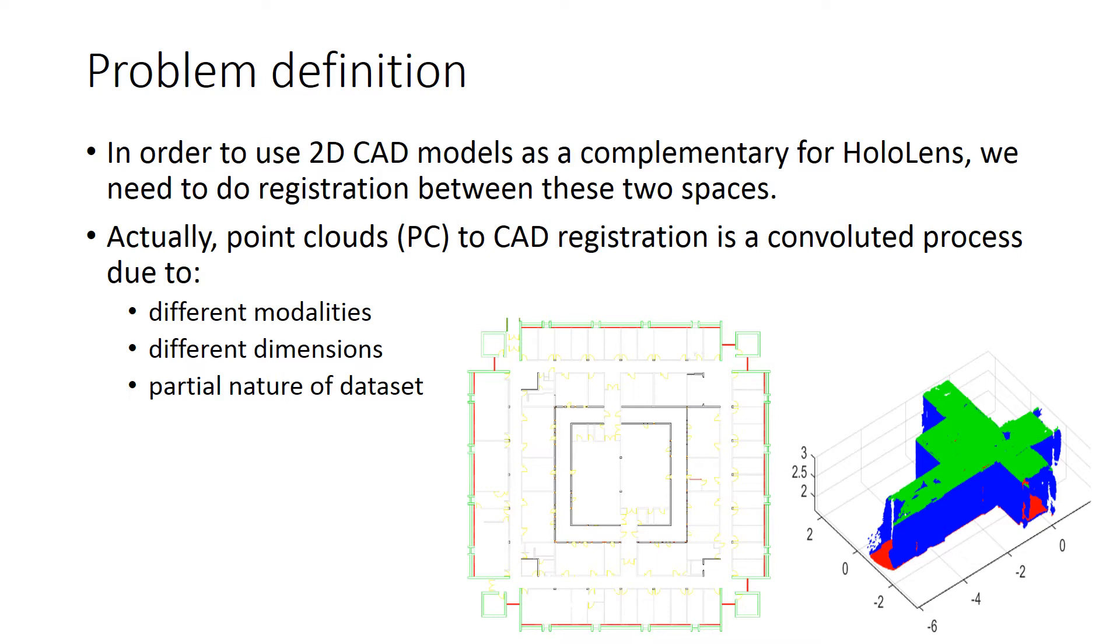These two spaces have different dimensions. These two spaces have a partial nature of datasets. To be more specific, the modality of CAD is semantic information, semantic kind information, while the modality of point clouds is height information.